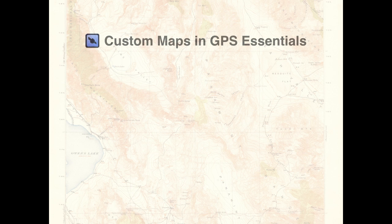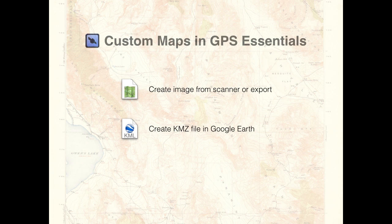Hello everybody and welcome to the GPS Essentials Quick Tutorials. Today I want to show you how to create custom maps. All you really need is an image file of your map. You can scan a paper map or export files as PNG or JPEG. Then we use Google Earth to create a KMZ file from this image, and finally we import this into GPS Essentials.